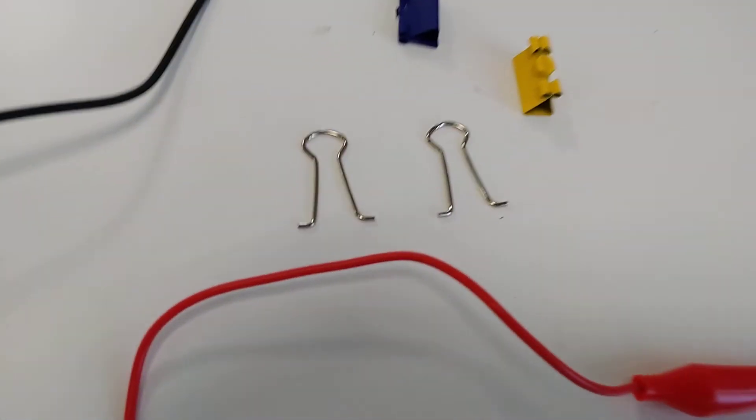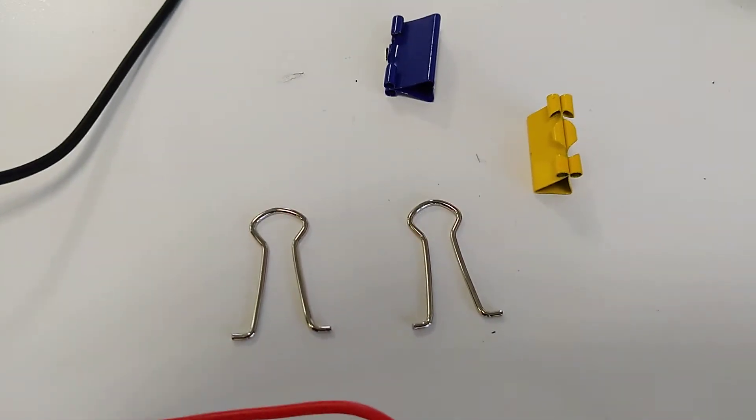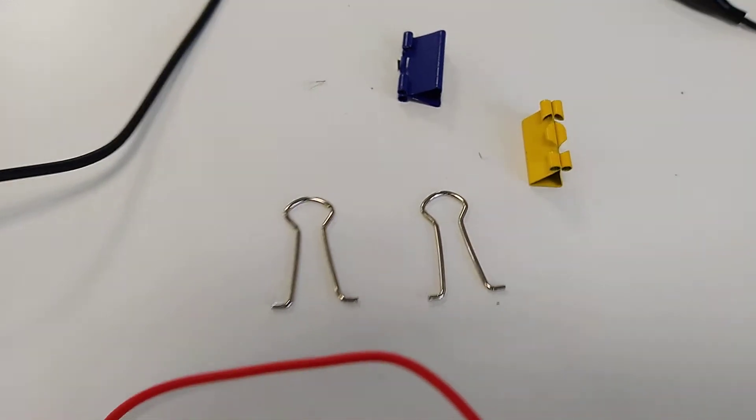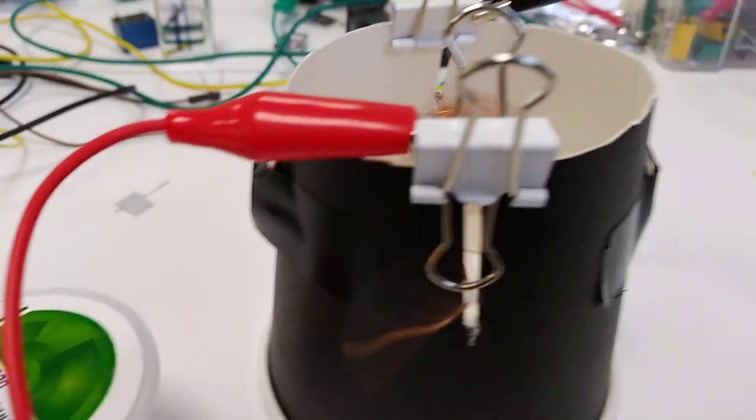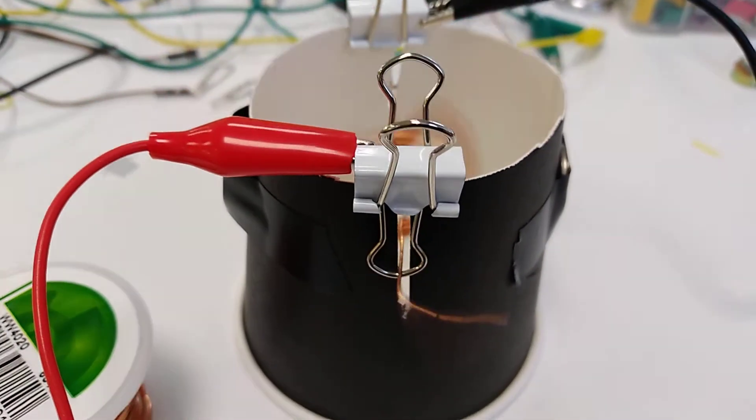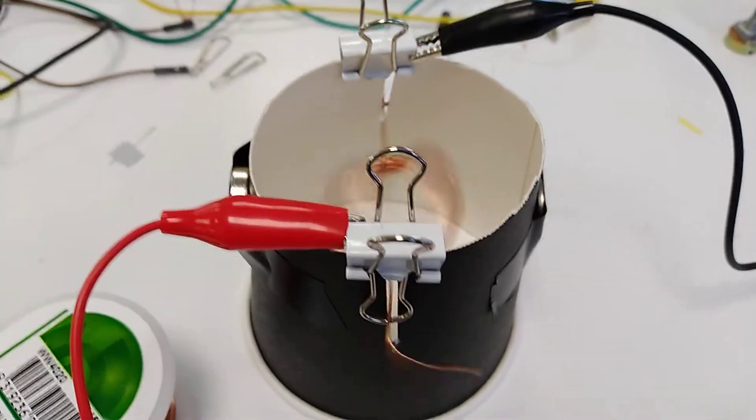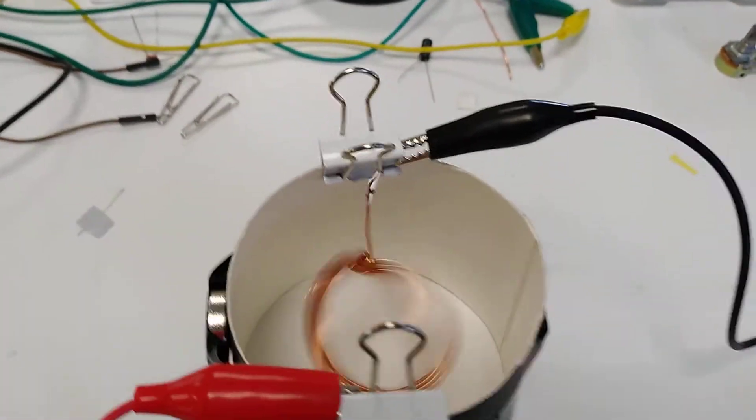For bearings I pulled apart one of these little bulldog clips and I'm attaching them to the cup with bulldog clips as well. It seems to be the easiest way of making a bearing and making contact with the bearing so that the current can pass through the coil.